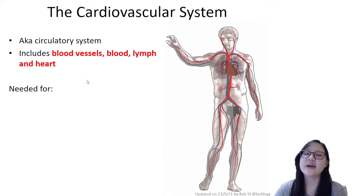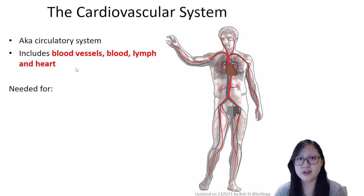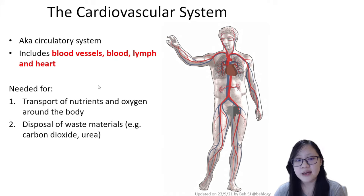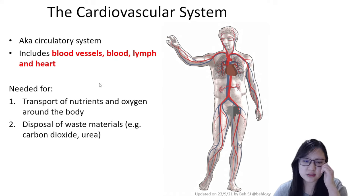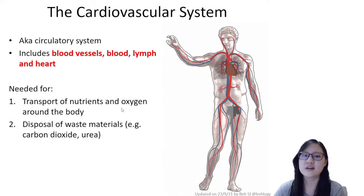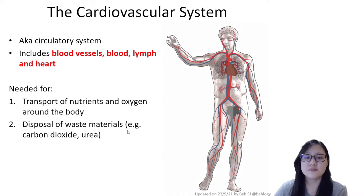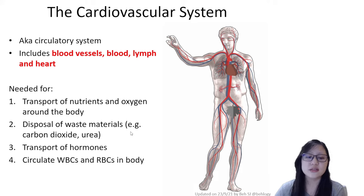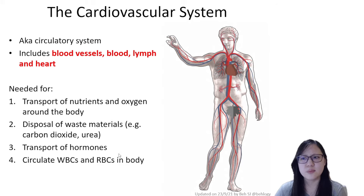The name kind of makes sense. This is an important system because it's needed for transport of nutrients and oxygen around the body. It's also for disposal of waste materials — for example, carbon dioxide and urea. It's also for the transport of hormones and to circulate white blood cells and red blood cells in the body, among many other things.